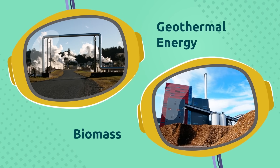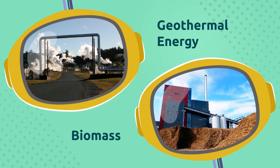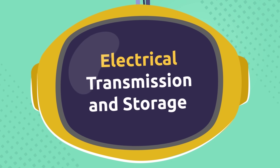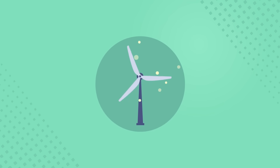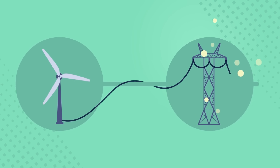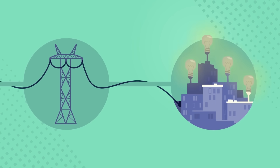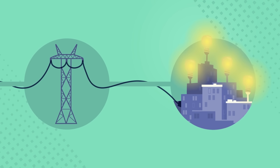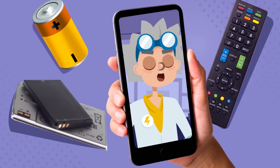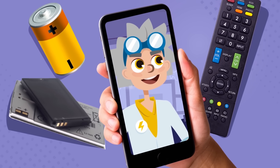There are more ways to produce electricity from natural resources, but the ones we saw today are the most common. Once electricity is created, it is transported through cables and wires to our homes, schools, and workplaces. Electricity can also be stored in batteries that we use to power our flashlights, mobile phones, or remote controls.